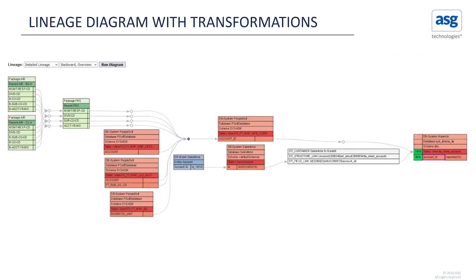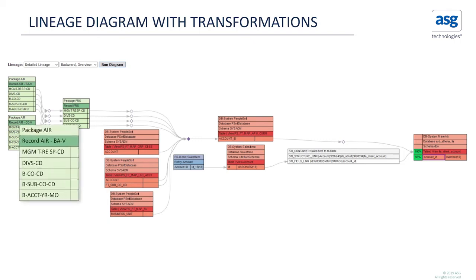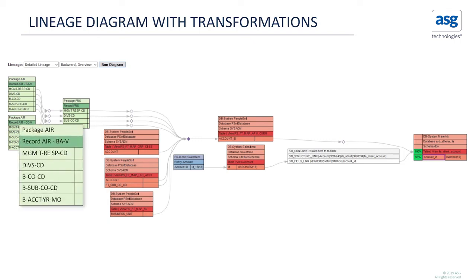Clicking on the hyperlink opens up the lineage diagram, which shows you end-to-end high-level lineage and also provides you a toggle to see detailed lineage with transformations. The arrows show the data flow, so you know exactly where the data is being moved to, where it's coming from, and anywhere you have a transformation. As you see in the lineage diagram, all the different technologies are color-coded.